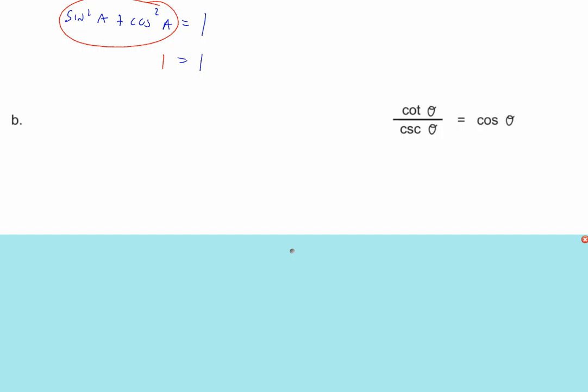For the next problem — cotangent over cosecant equals cosine — you have to decide how to deal with it. Do you want to turn cotangent into 1 over tangent? Do you want to turn cosecant into 1 over sine? Do you want to multiply both sides by cosecant theta? There are a lot of different ways you can go, so you just have to decide on a track and go after it.